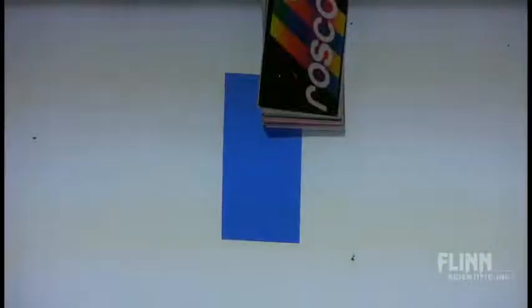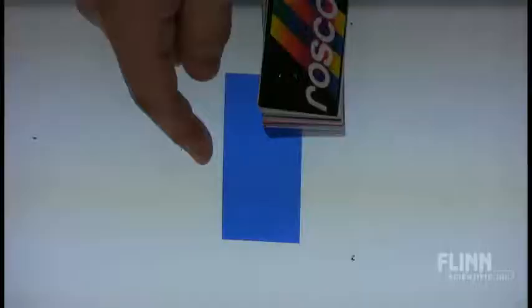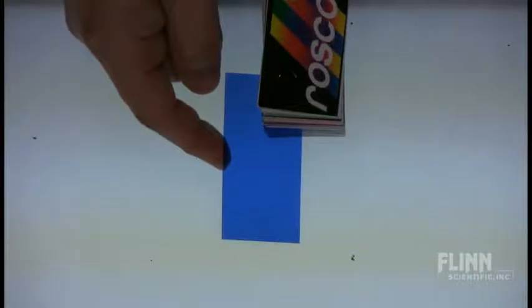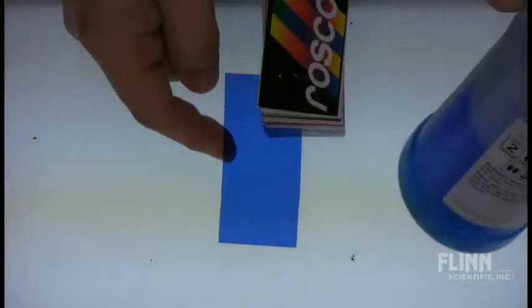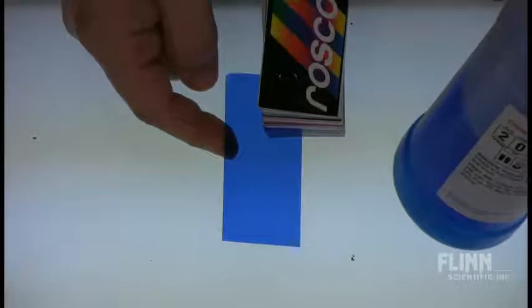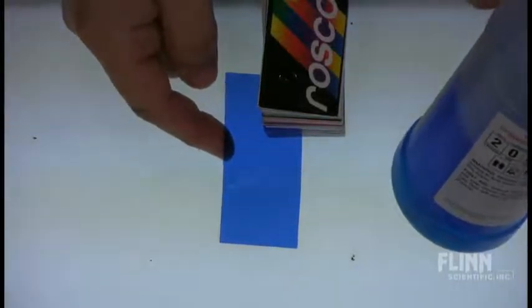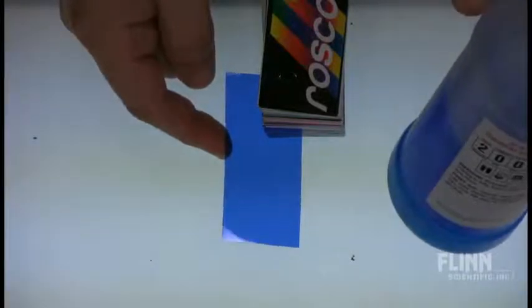This is a set of Rosco-Lux samples. These are theater gels. These are different colored samples that they might use to give different mood lighting in theatrical productions. But it has phenomenal aspects of chemistry. I have picked a particular shade of blue right here that seems to come close to matching a one molar copper sulfate solution. They're very close in color intensities.